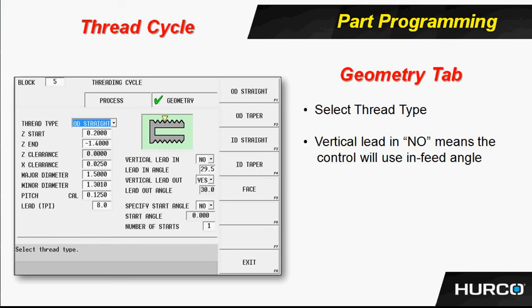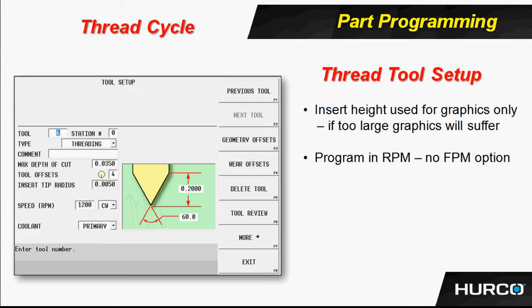Last, we see the thread tool setup. Go to the tool setup screen and select 'threading' for the type. Enter the max depth of cut and which tool offset is being used. Tip radius, of course, can be set on the geometry offset screen, as well as the orientation. Notice that in this case it's an OD threading tool — the orientation points straight down. If this was an ID threading tool, the orientation would point straight up. Enter the speed or RPM that will be automatically set when we pull this tool into the turret, then coolant — whether you want it on or not and which selection.